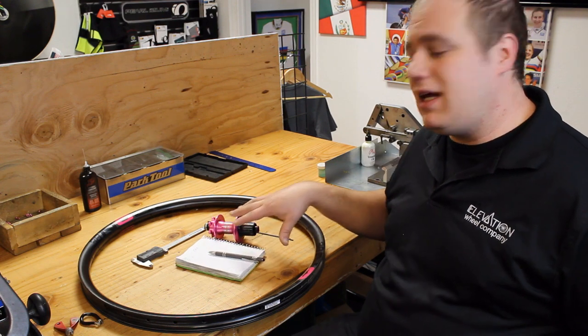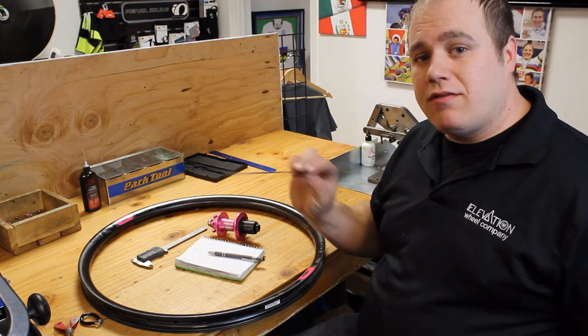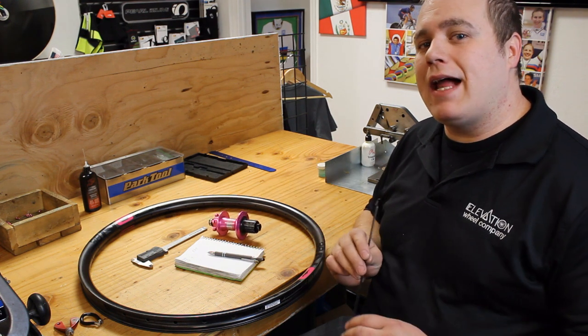Thankfully, very easy to do. All you need is a couple spokes of known length, a couple spoke nipples, and a pair of calipers.